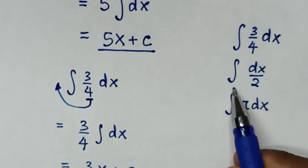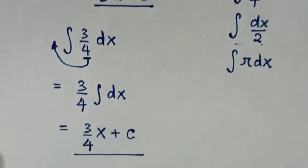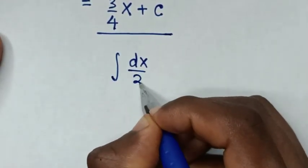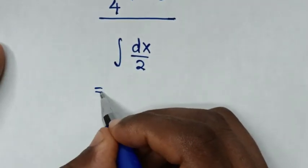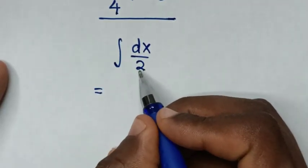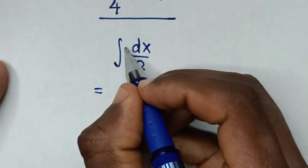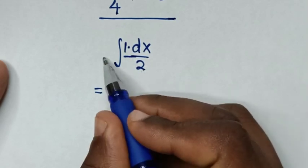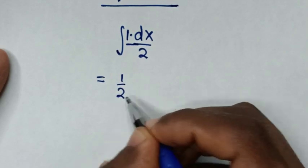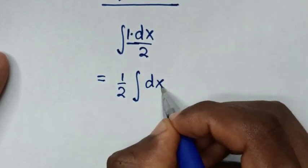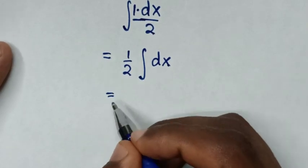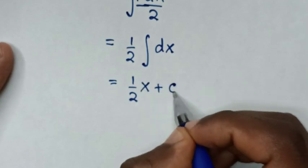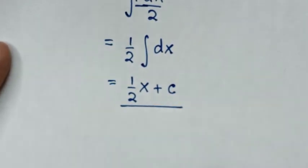Another example: the integral of dx over 2. From dx over 2, we treat it as 1 over 2 times dx. The fraction 1 over 2 is a constant, so it moves outside of the integral. It will be 1 over 2 times the integral of dx, which equals x plus C. Therefore, the answer is x over 2 plus C.